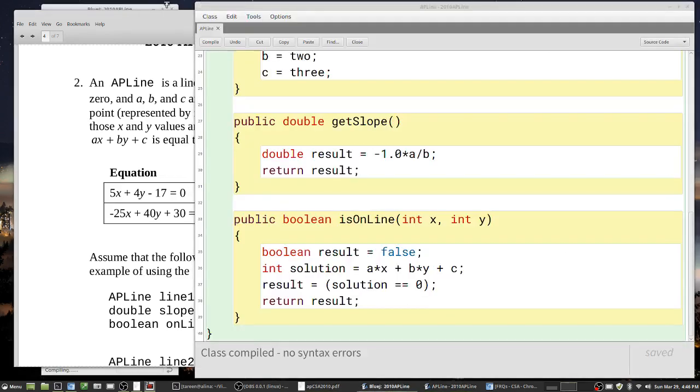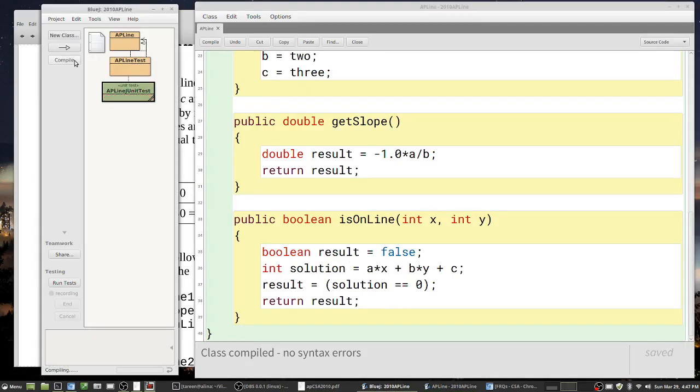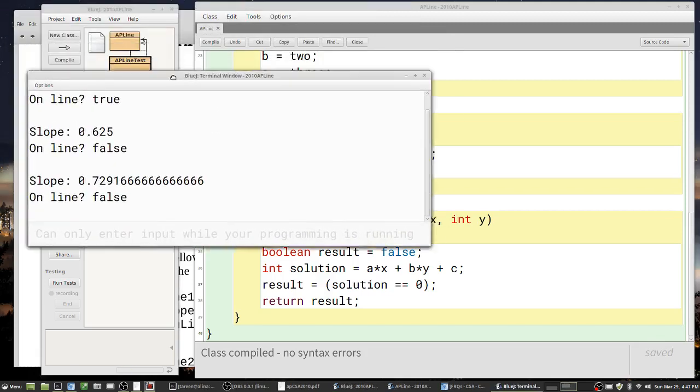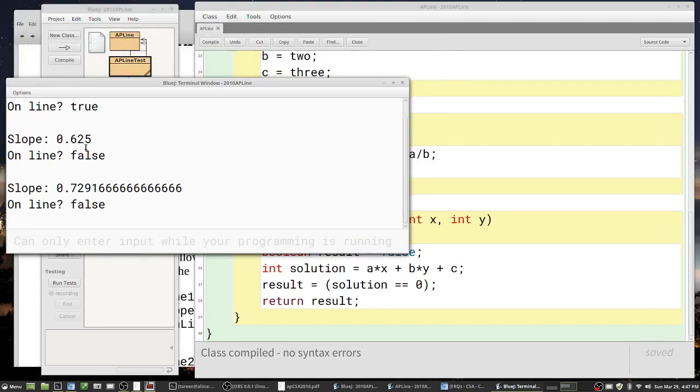Let me compile here, looks all right. Run this - good. OnLine true, slope 0.625, onLine false, slope 0.72. These are some sample values that I put in. I think this is correct, but let me make one more check.